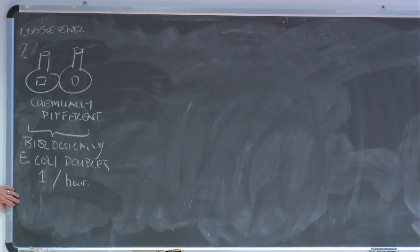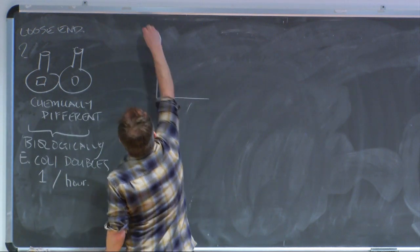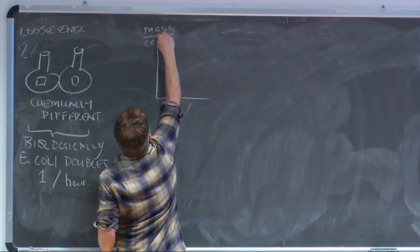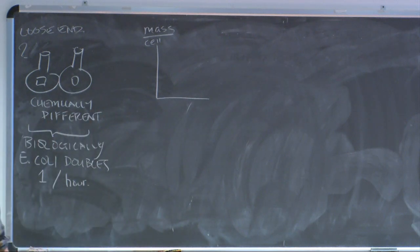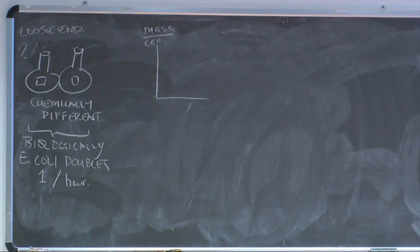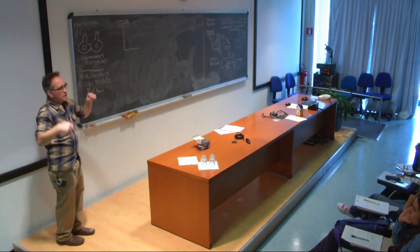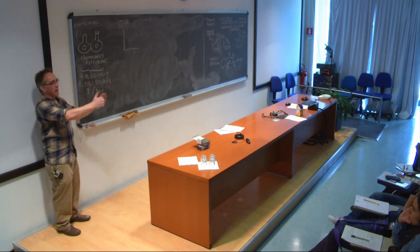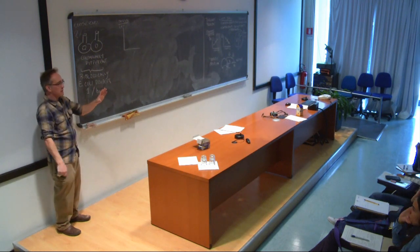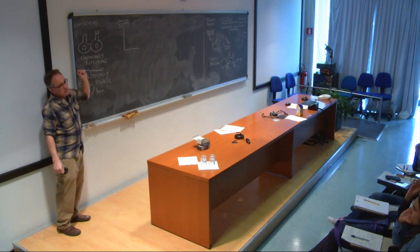Contrary to the expectation that chemistry differences mean biological differences, these cells growing at the same rate are biologically indistinguishable. If you break them open and measure RNA per cell, DNA per cell, protein per cell — they're the same. By any large-scale measure, they're indistinguishable. So if I took some of these cells and gave you the chemical breakdown at the level of DNA, RNA, and protein, you wouldn't be able to tell me which flask they came from. The chemical composition of these cells is predominantly determined by the growth rate.